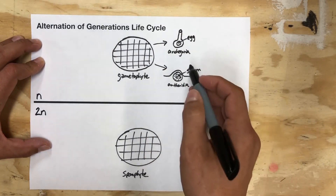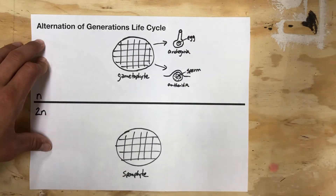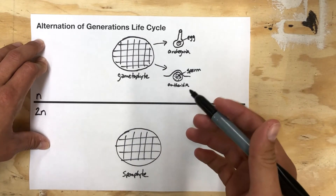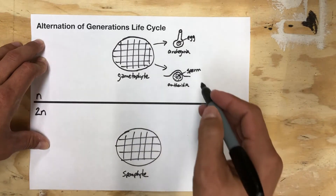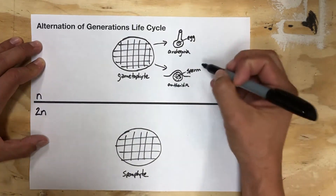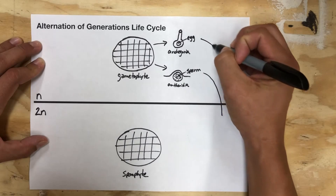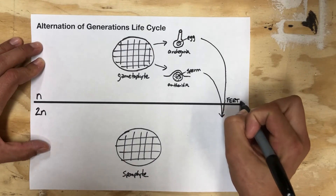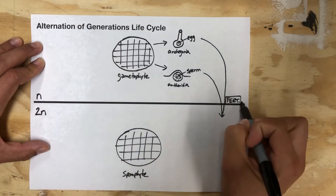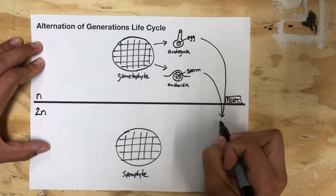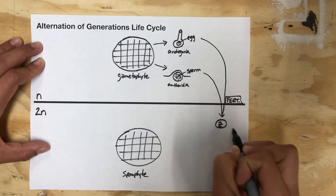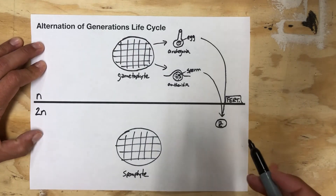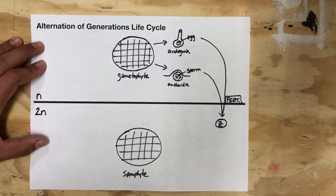The sperm are now going to travel over to the egg. If this were a pine tree, that happens via something like pollen; if this were a bryophyte or a fern, the sperm swim from the antheridia to the archegonia. In either case, they meet and we have a fertilization event. Once we have a fertilized egg, we have a zygote — now diploid.